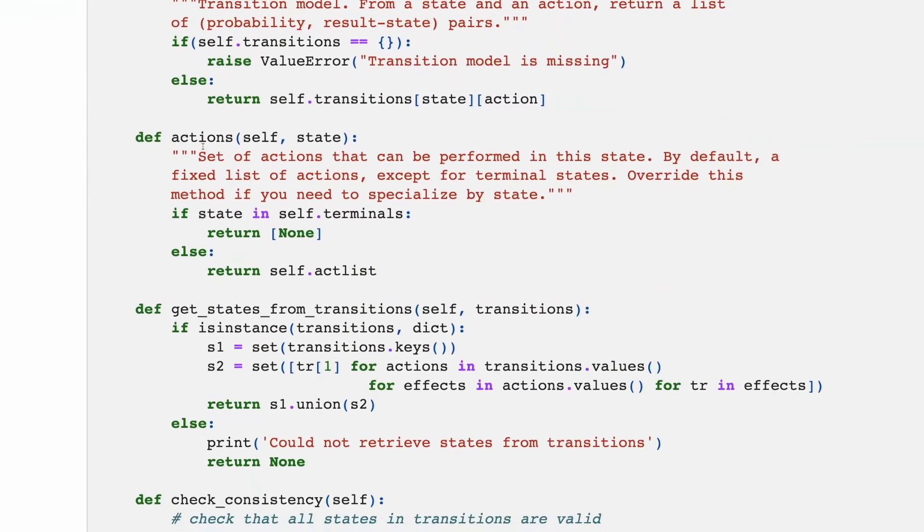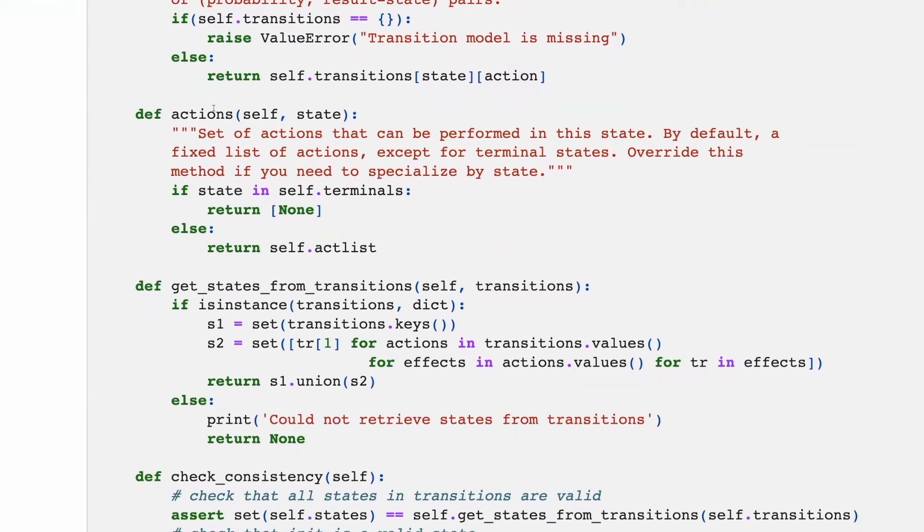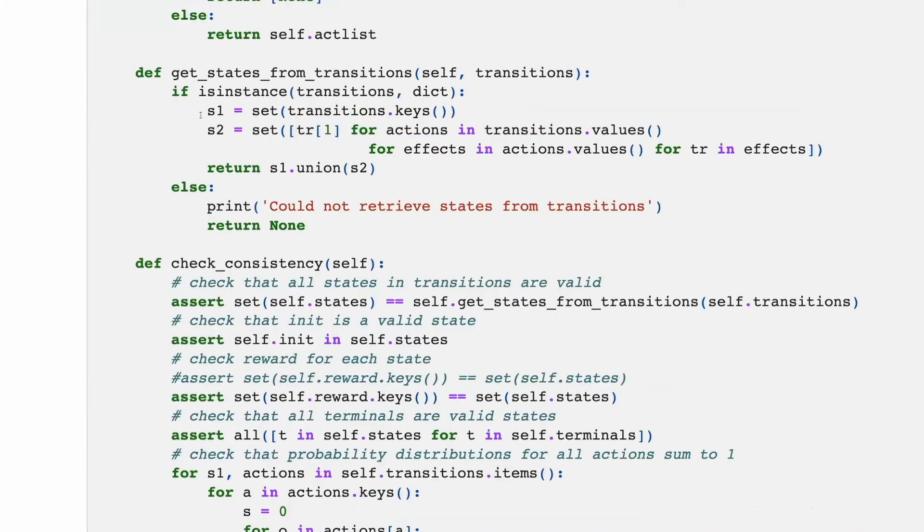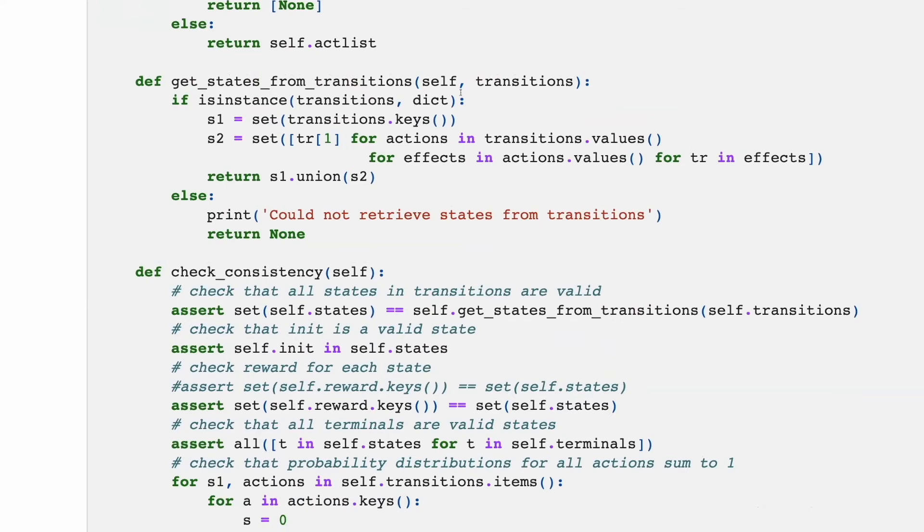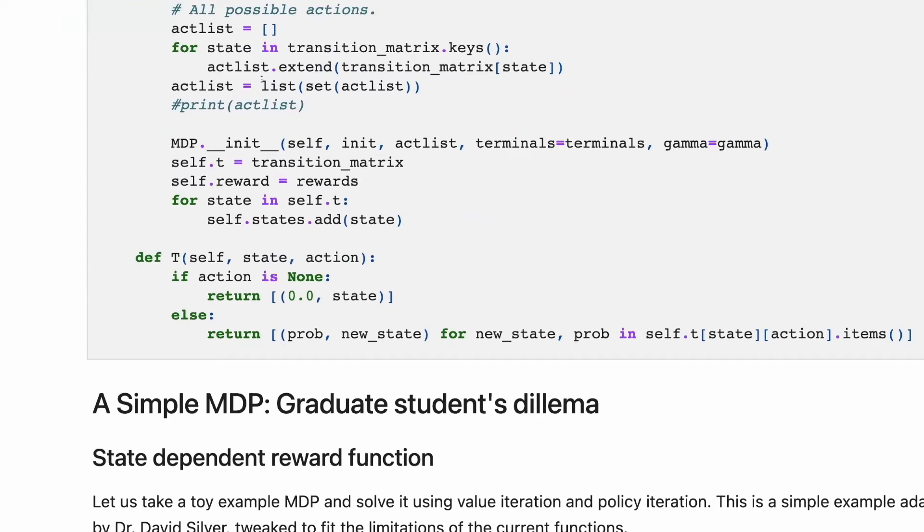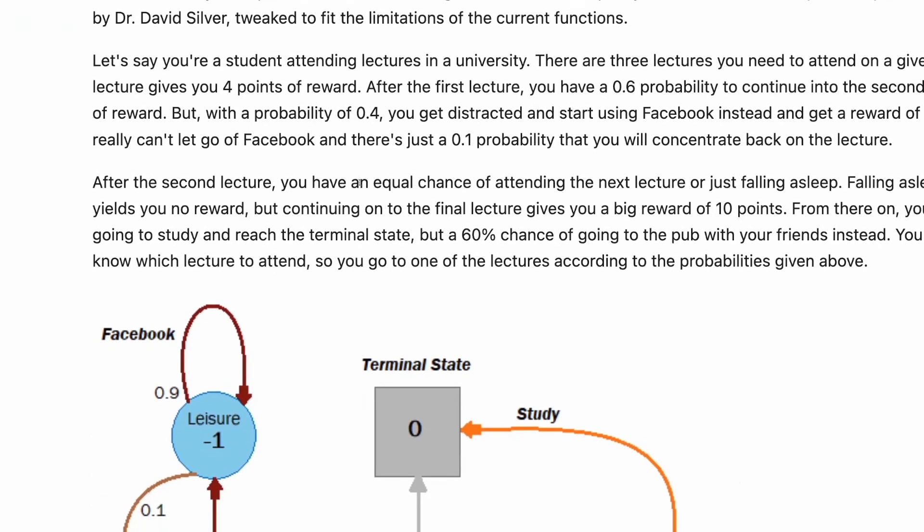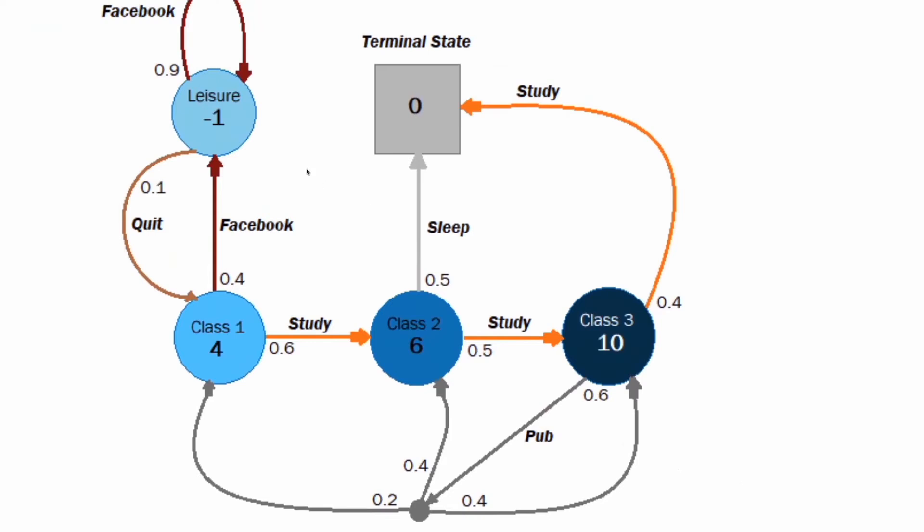It returns a chance for the action to be taken for each state. Set of actions that can be performed in this state. By default, it's a fixed list of actions except for terminal state. For terminal, it will be none. We can get states from transitions, essentially just multiplying the chance of a transition and the transition function. Custom MDP is a graduate student's dilemma. Here is how it looks like.